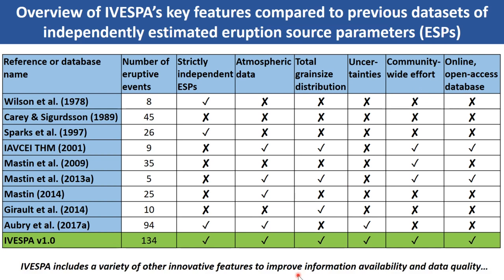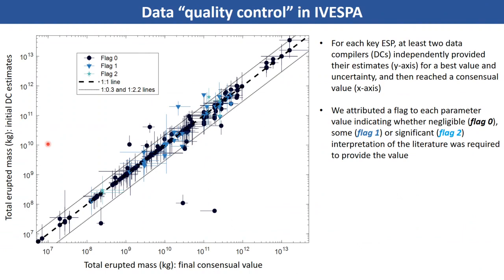In addition to these main features, we made major efforts to improve data quality and information availability. We had an extensive data quality control procedure in place for each event: two members of the working group independently reported each parameter value from their own literature search, then revealed their values to each other to reach a consensus. The figure illustrates this process for the total erupted mass of tephra. The y-axis is the value initially estimated by individual co-authors or data compilers, and the x-axis shows the consensual value they reached.